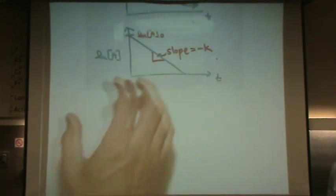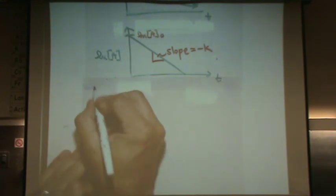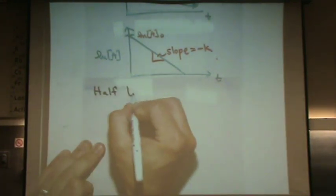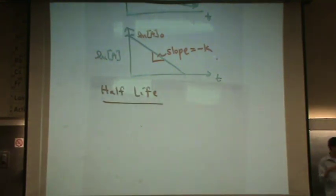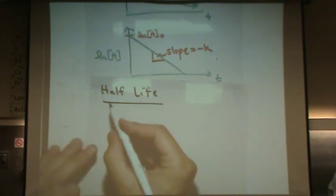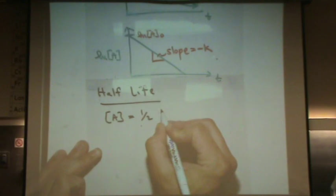Let's also do half life. It has the same definition here, but remember it's a different kind of decay here. It's an exponential decay. So again, time required for half the reactant to be consumed. So that's where [A] goes to half [A]₀.